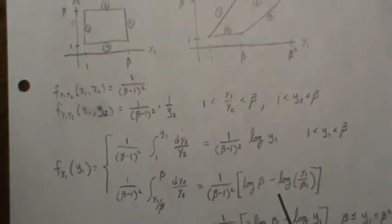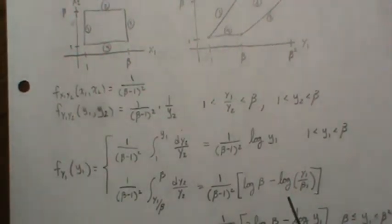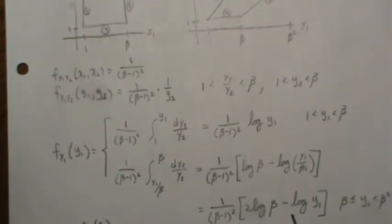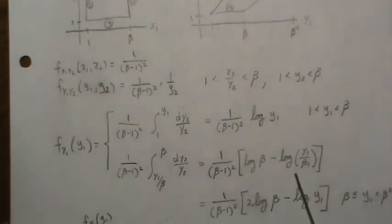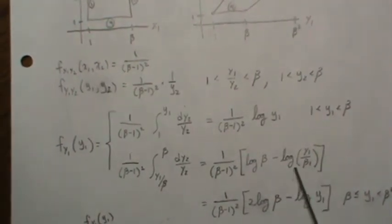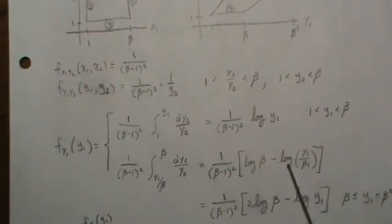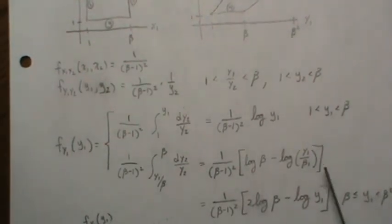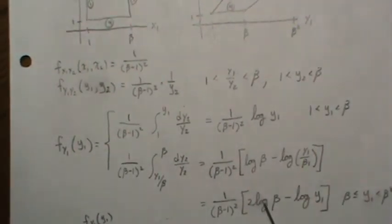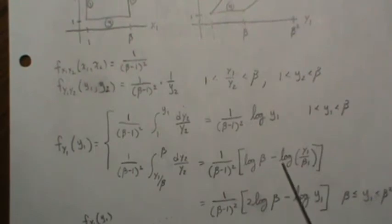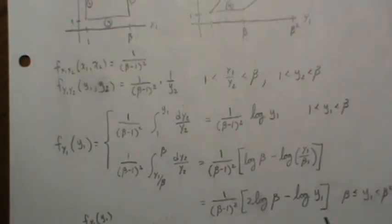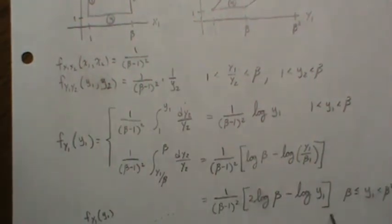This can be simplified because since the log of a division is the difference of the logs, and then that minus changes that to a plus. That becomes 2 log beta minus log of y1. Again, this is from beta to beta squared, and we're done. So this is the density.